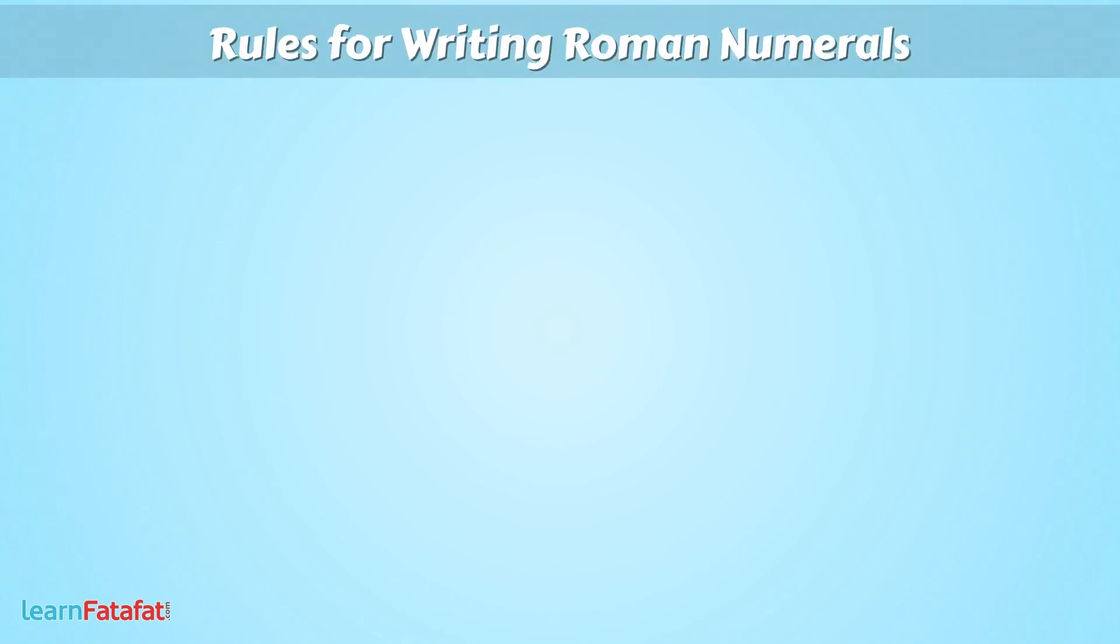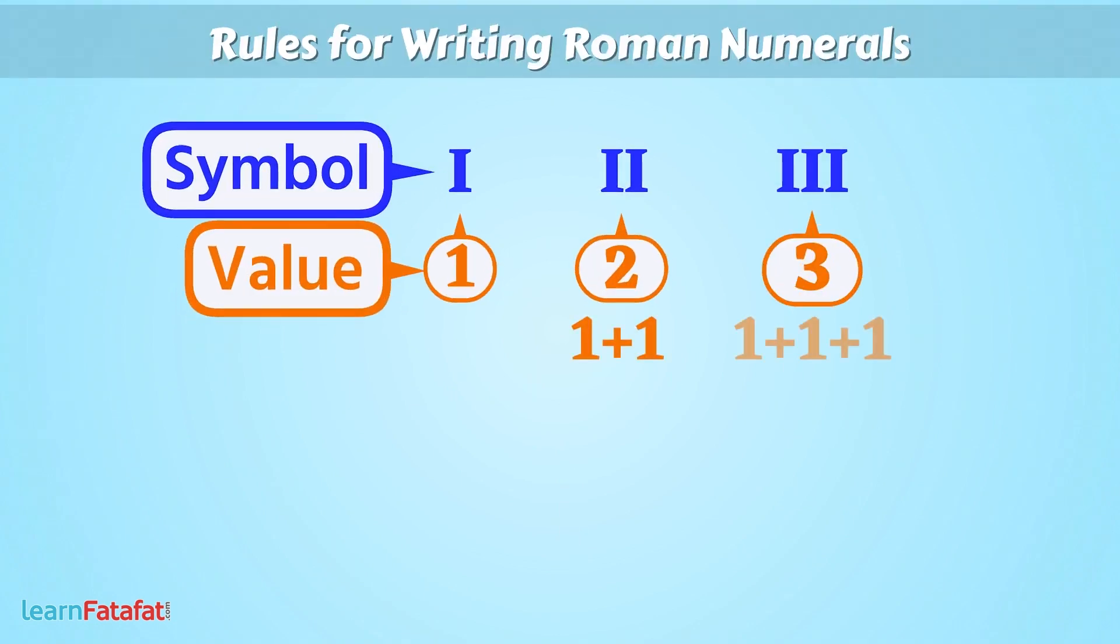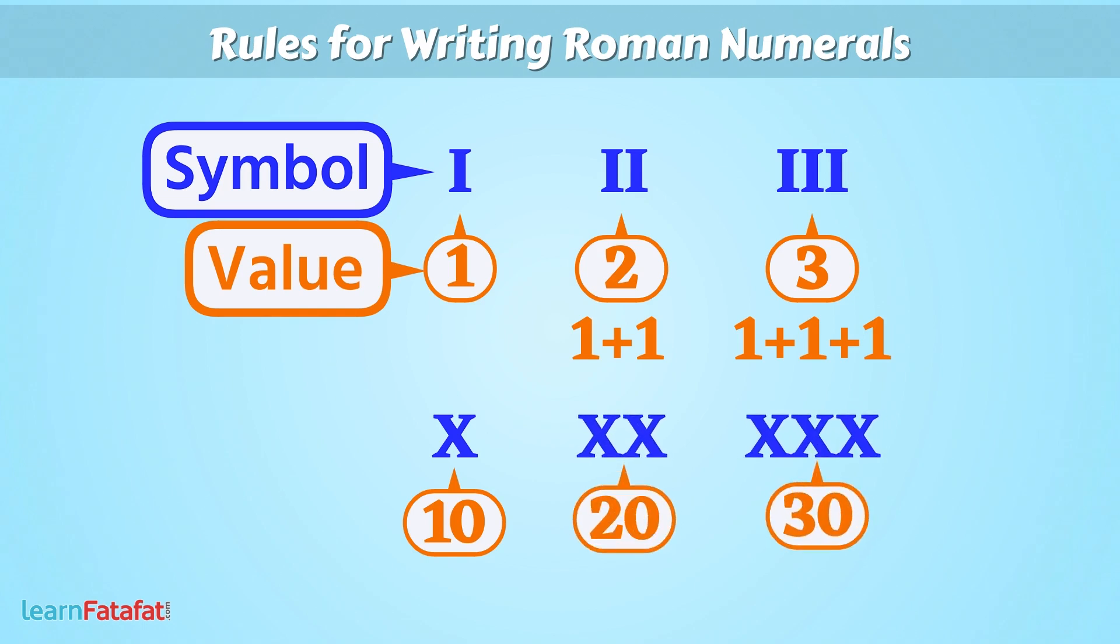Rules for writing Roman numerals. If a symbol is repeated, its value is added as many times as it occurs. For example, 10 can be represented as X, 20 can be represented as XX, 30 can be represented as XXX.